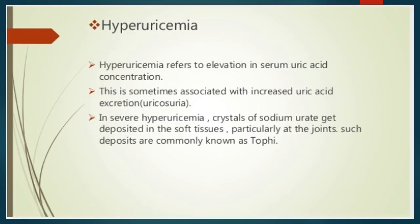The next disorder is hyperuricemia, which refers to elevation in serum uric acid concentration. This is sometimes associated with increased uric acid excretion, a condition also known as uricosuria. In severe hyperuricemia, crystals of sodium urate get deposited in soft tissues, particularly at the joints. Such deposits are commonly known as tophi.